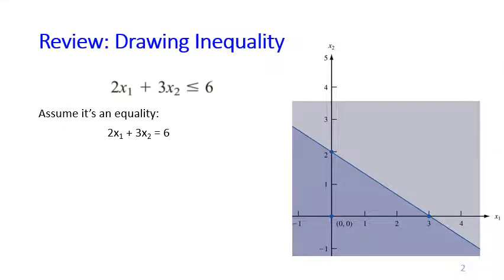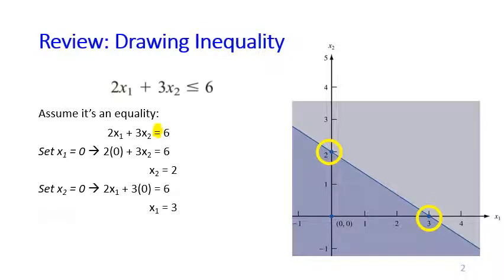Suppose you have this inequality 2x1 plus 3x2 less than or equal to 6. First we assume it is an equality, so you assume that the sign here becomes equal. And then you plug in x1 equals 0 to this equality, you obtain x2 equals 2. You plug in x2 equals 0, you obtain x1 equals 3, and then you can draw the line that connects those two points.